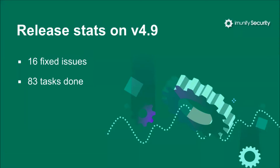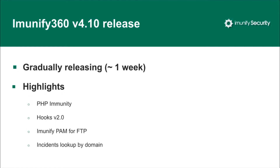Now let's take a look at version 4.10. It has been released to beta already and is partially available as a production release — currently available for about 8% of all customers and still in gradual rollout. It will be available for everyone in about a week. We've implemented two noticeable features: PHP Immunity and Hooks version 2. We also have a PAM extension for FTP and a small UI improvement.